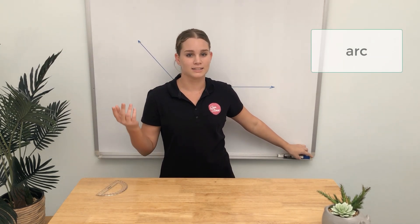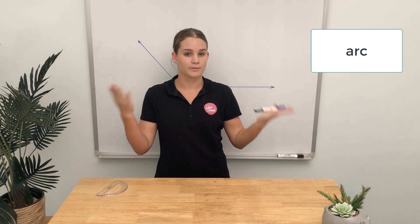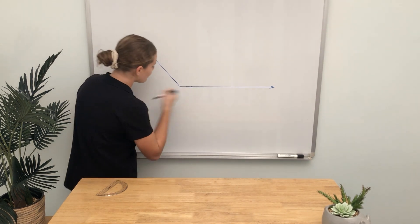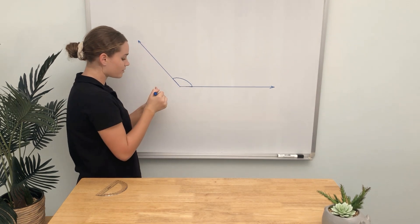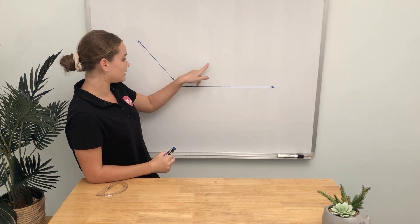We use an arc to clarify which angle we're talking about. We'll draw an arc right here, so now we know we're talking about this angle.